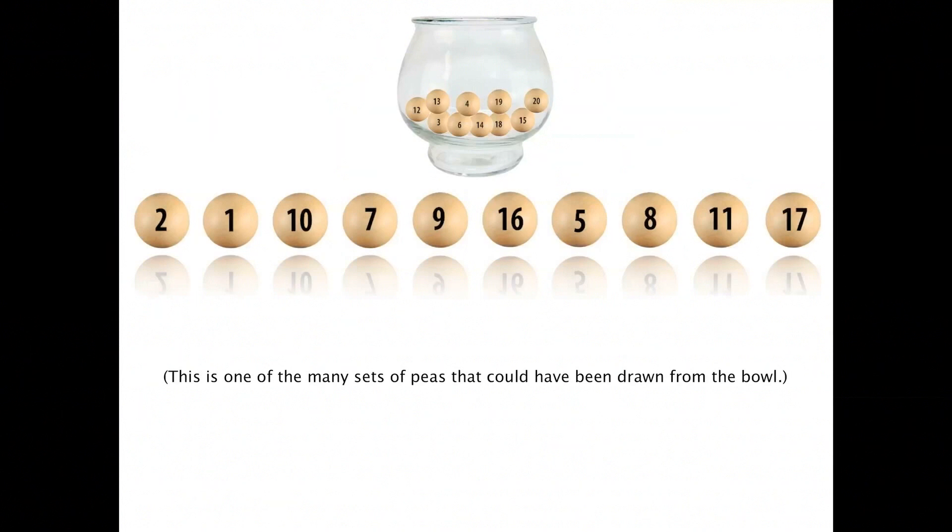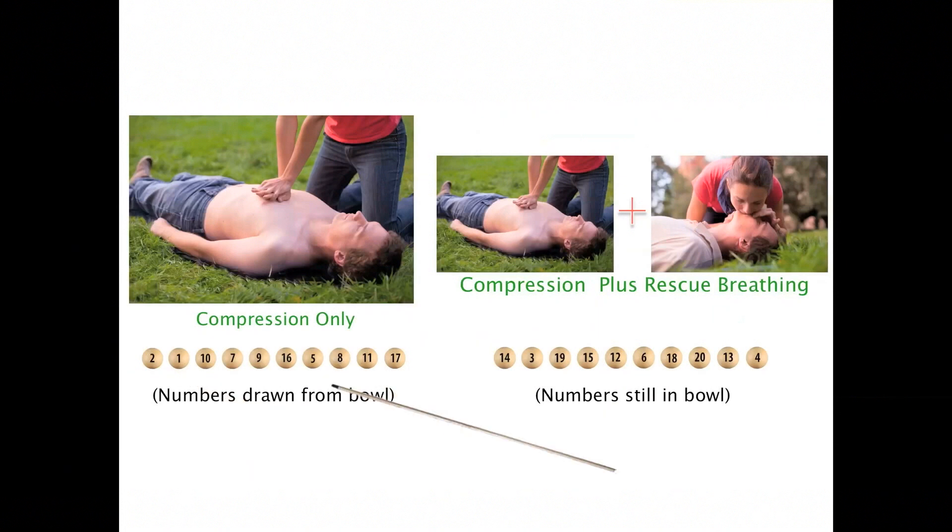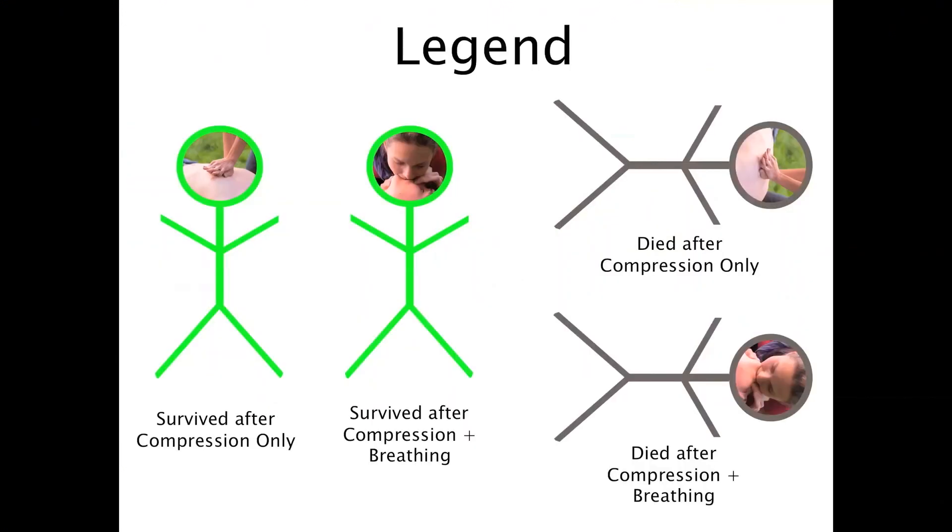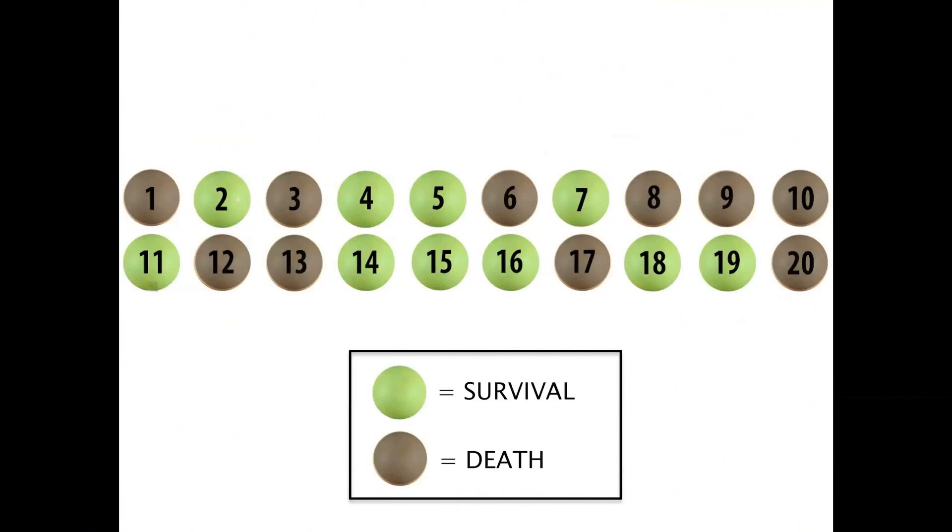As calls for CPR advice arrived in order one after the other, he recommended compression only for the 10 cases whose order of occurrence corresponded to the numbers on the selected peas, and compression plus breathing for the other 10 cases. For each case, there were four possibilities regarding hospitalization or death. So he kept track of the survivals and deaths of the sequential cases assigned CPR by either method.